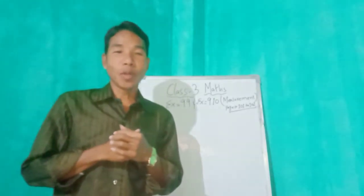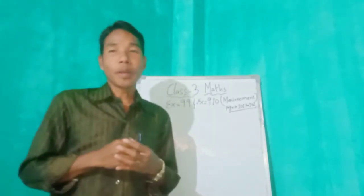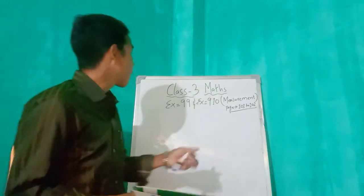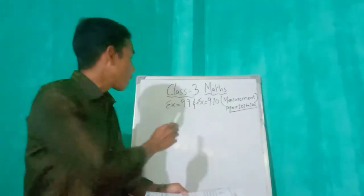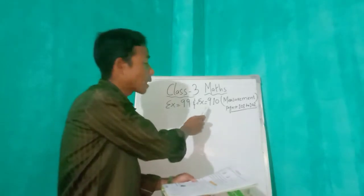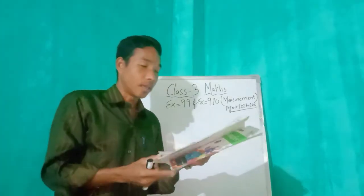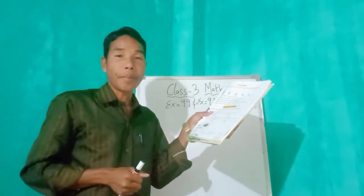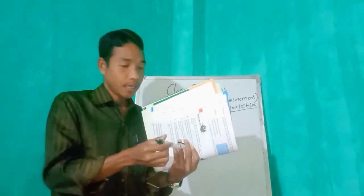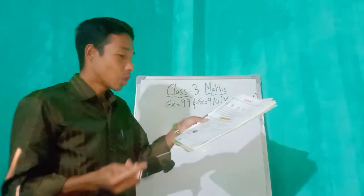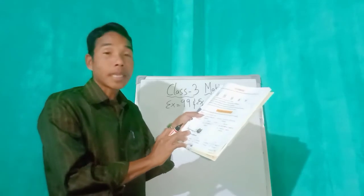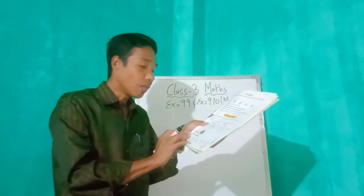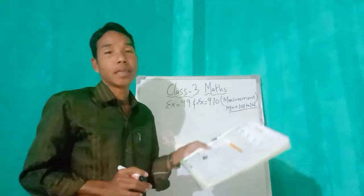Hi Class 3, good morning! Welcome to our math class. Today I am going to teach from Exercise 9.9 and Exercise 9.2 — two exercises together. First of all, open to page number 101 in your math book. It is written here: number one, Exercise 9.9, convert into milliliters.